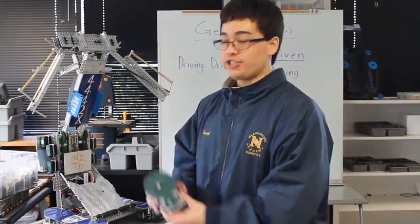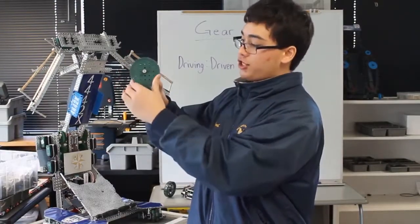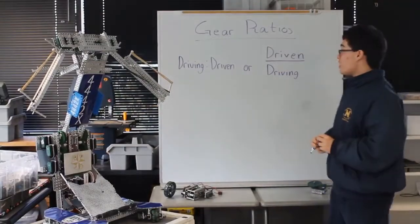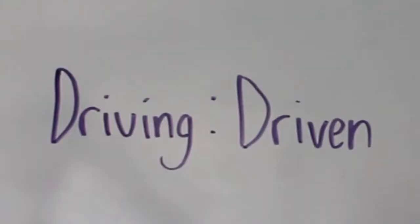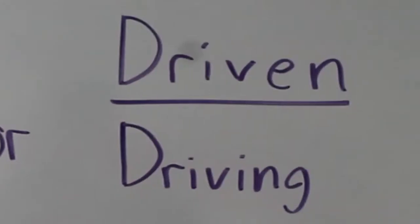The higher the gear ratio, the faster the output speed will be, and the lower the gear ratio, the slower the output speed will be. A gear ratio can be given in two different ways. You can use a colon and write driving to driven, or you can put it as a fraction with driven over driving.